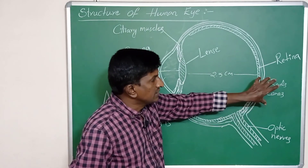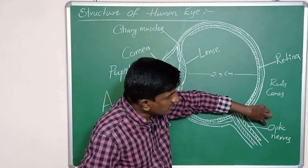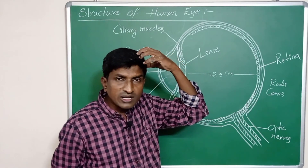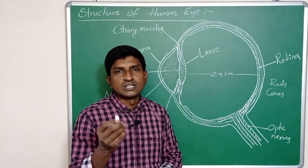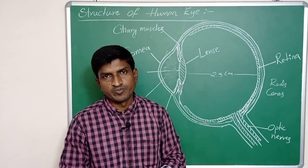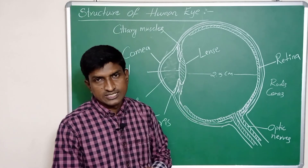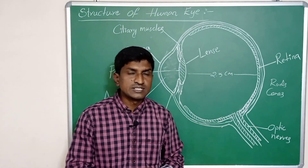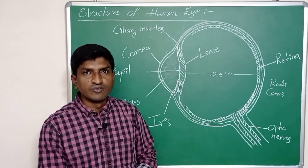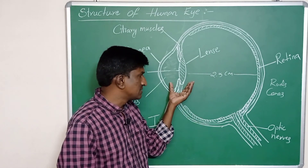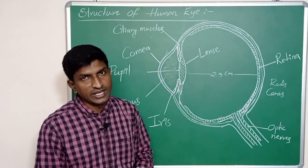These signals are passed from the optic nerves to our brain, and our brain feels the sensation of vision. In this way our eye works. This is about the structure of the human eye. In the next class we will discuss the maximum and minimum focal length of the eye lens. Thank you.